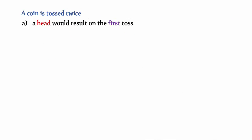If we toss a coin twice, the possible outcomes are head-head, head-tail, tail-head, and tail-tail.